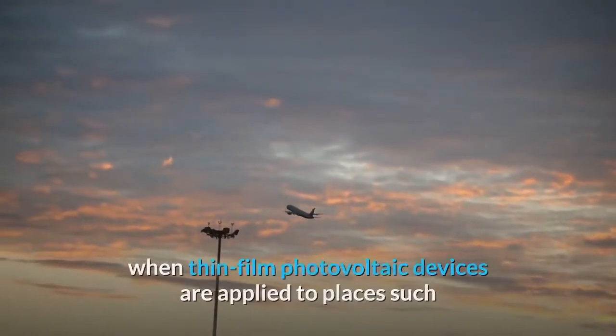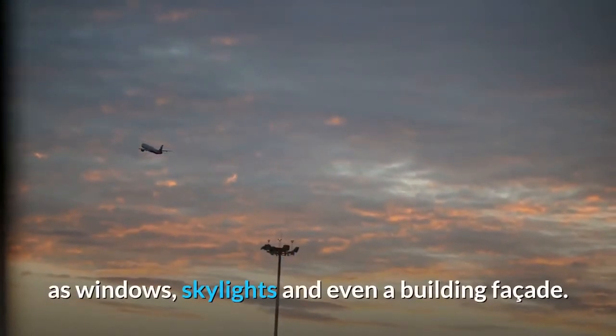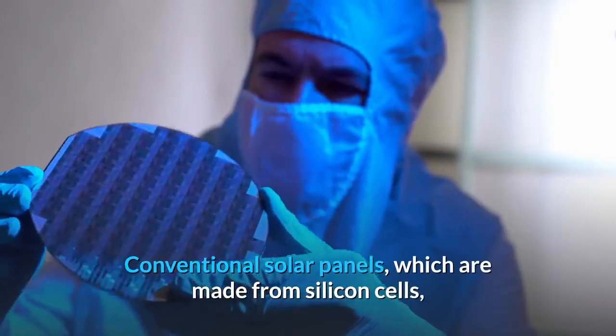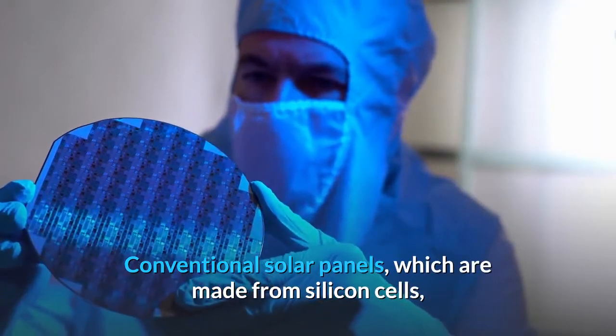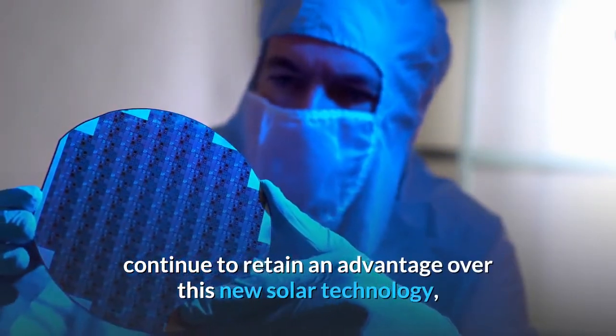Sun exposure becomes less of a problem when thin film photovoltaic devices are applied to places such as windows, skylights, and even a building facade. Conventional solar panels which are made from silicon cells continue to retain an advantage over this new solar technology, but they are inflexible, expensive, and no longer the most efficient option compared to DSSCs.